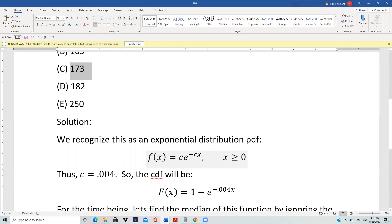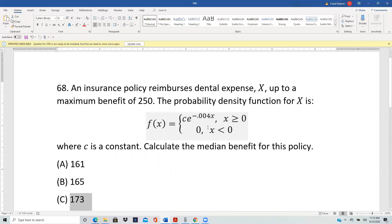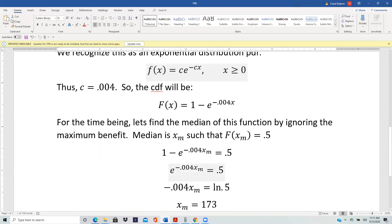And so we can read from here that c is 0.04. c is the coefficient of the negative x. And the CDF will be F(x) equals 1 minus e to the negative cx.